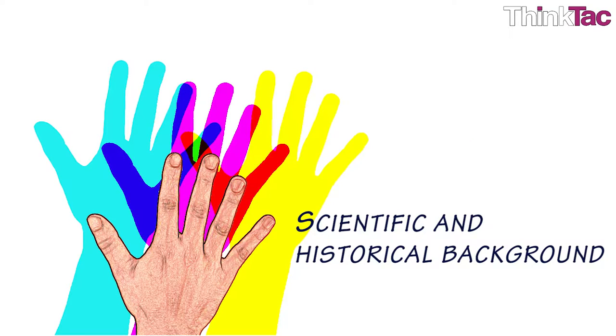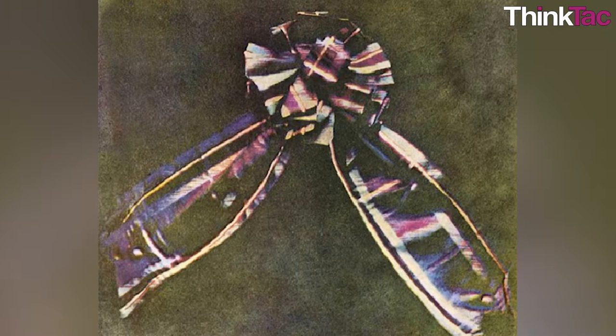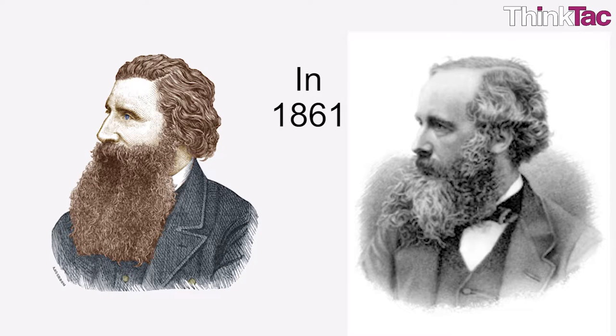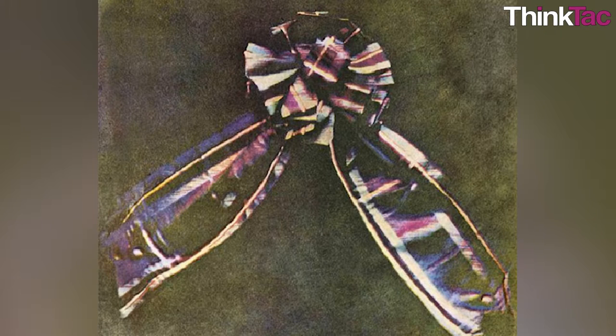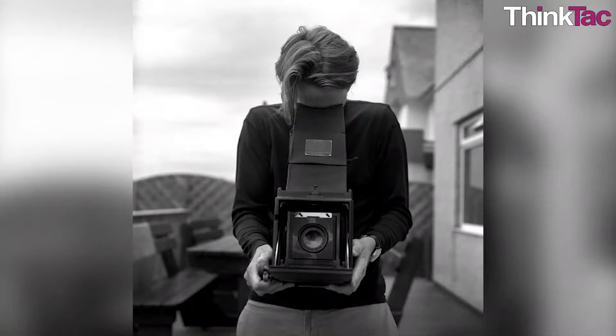Here are some scientific and historical background. The first color photograph: Do you know how the first color photograph was taken and by whom? It was taken by Thomas Sutton working with James Maxwell in 1861. It was a photograph of a tartan ribbon, that is a multicolored striped ribbon. But they had cameras that could only take photographs in black and white.